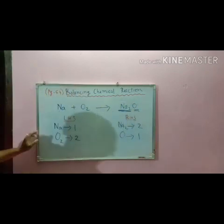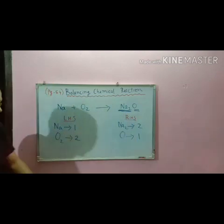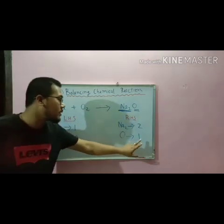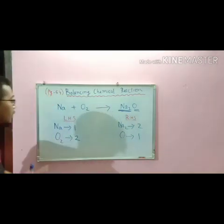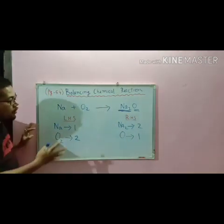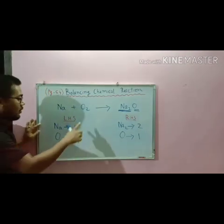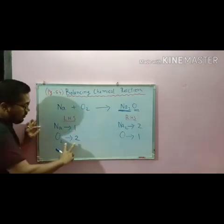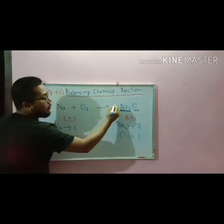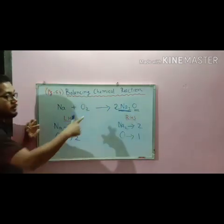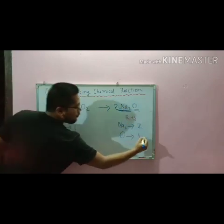None of them are balanced. First of all, let us see the oxygen part. Oxygen: two on LHS, one on RHS. So if we write a coefficient of two on the RHS, this oxygen will become two.